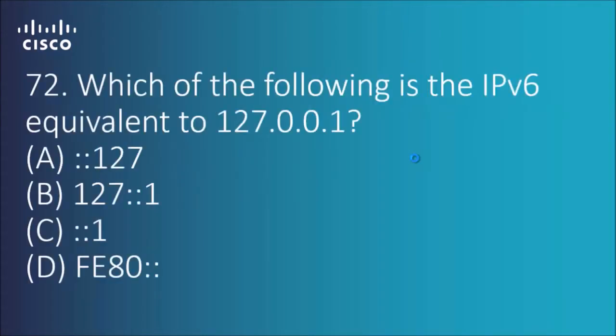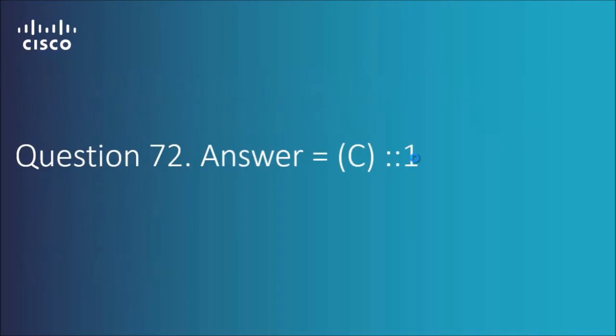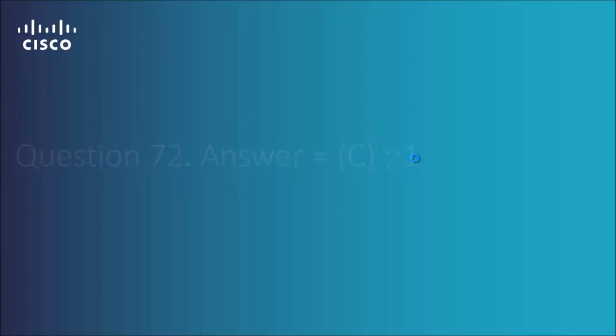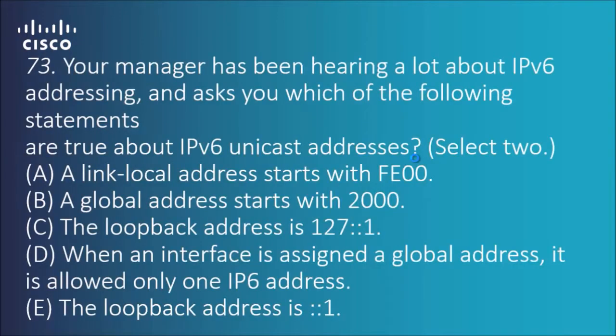First question: which of the following is the IPv6 equivalent to 127.0.0.1? That's the IPv4 equivalent of the loopback address. The answer for this one is C — you can see it's got the double colons and then a one. Essentially that means there are 31 zeros behind that, with 32 total binary digits.